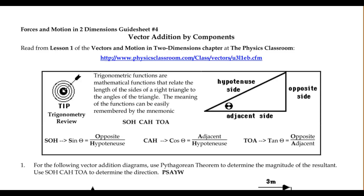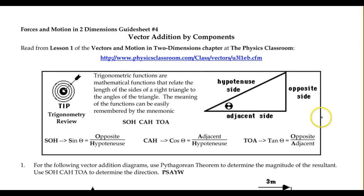In guide sheet 4, we're going to look at how to use components to add vectors and also how to find components using SOHCAHTOA methods. In a right triangle — and many times we can force the right triangle by taking a vector and breaking it into x and y perpendicular components.